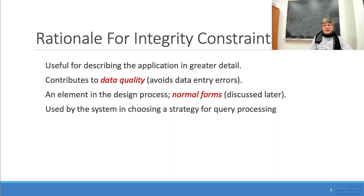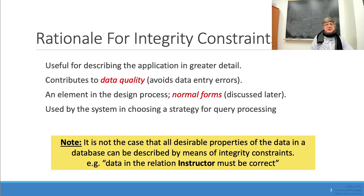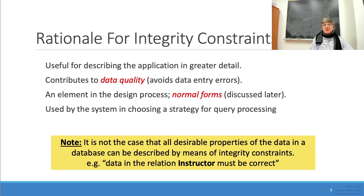Additionally, integrity constraints are part of the design process, which we will revisit when discussing normal forms. Note that not all desirable properties of data can be described by integrity constraints. For example, there is no way to guarantee that the names of instructors in the instructors table have been recorded correctly.